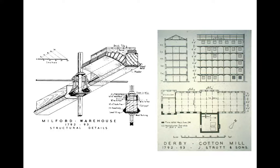They raised the rates on typical wood construction with the admonition: you better find a better way of constructing factories if you want these rates to come down. This was open market capitalism at its best. So it's not surprising then that the very next year, 1792, we get the first use of iron structures in a factory. It's now less expensive to build with iron than it is to pay the high insurance rates for wood structures. The British are now starting to develop multi-story iron framing — that is, iron columns first, and then eventually with iron beams.